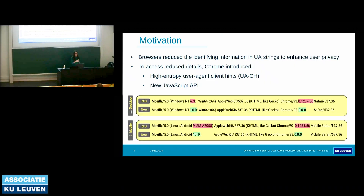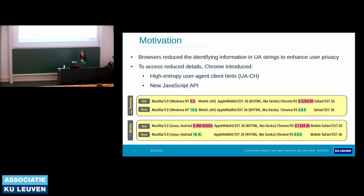To minimize the information in the user agent string for preventing passive browser fingerprinting, browser vendors including Google Chrome decided to reduce information in the user agent string. As you can see here, Chrome returns zeros instead of the build version and returns the fixed string 10 instead of the platform version. However, to expose this reduced information, Google introduced new high entropy user agent client hint headers and also a new JavaScript interface. This new JavaScript interface contains a method called get high entropy values.